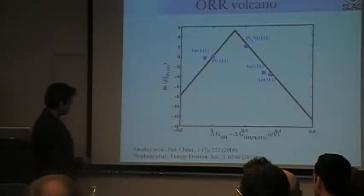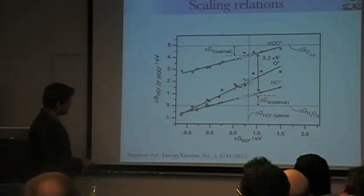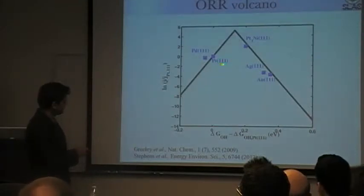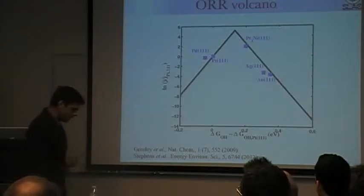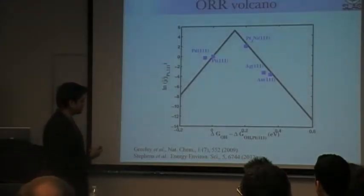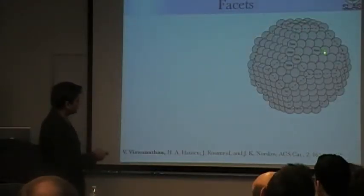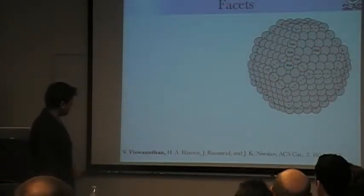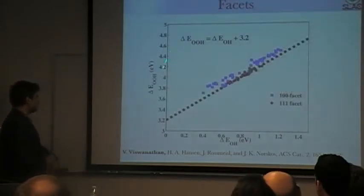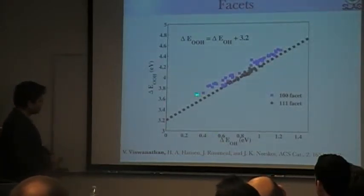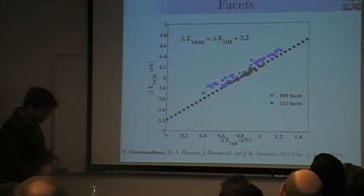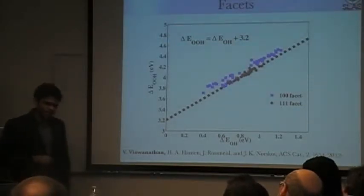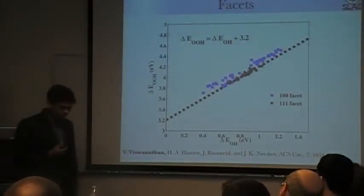And so this is of course on only one class of facets. This is the dense facet of metals, the one-on-one facet. Now what happens when you look at other facets? The other facets could be important on a nanoparticle. In a real nanoparticle you have the dense facet, which is the one-on-one, you have square facets, which is the one-zero-zero. The story is exactly similar. The OOH and OH scale by this same 3.2, and it almost is universal independent of whether you alloy the catalyst or any of these things.